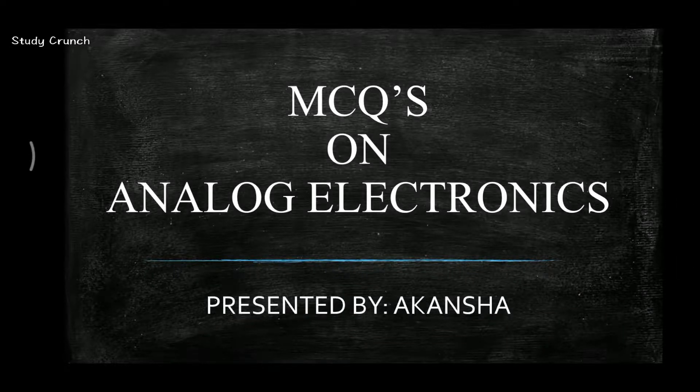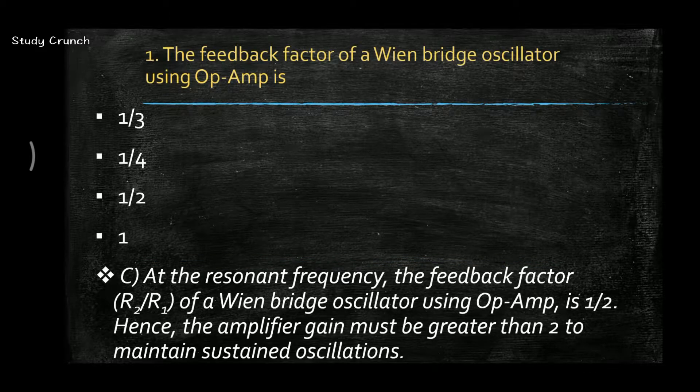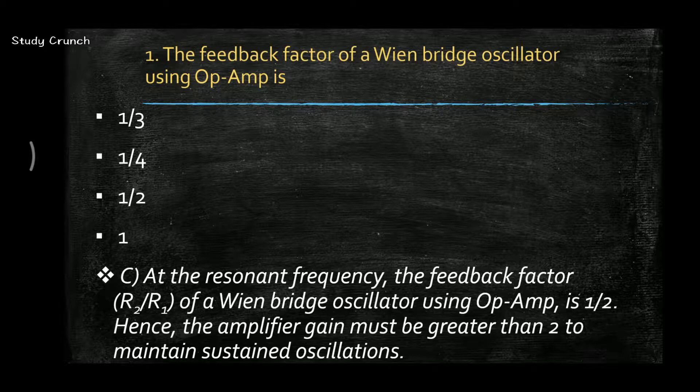Hello everyone, welcome back to my channel. In this series of MCQs on analog electronics, we'll be starting off with some questions. The first question is: the feedback factor of Wien bridge oscillator using op-amp is. The answer is it is half because at the resonant frequency.